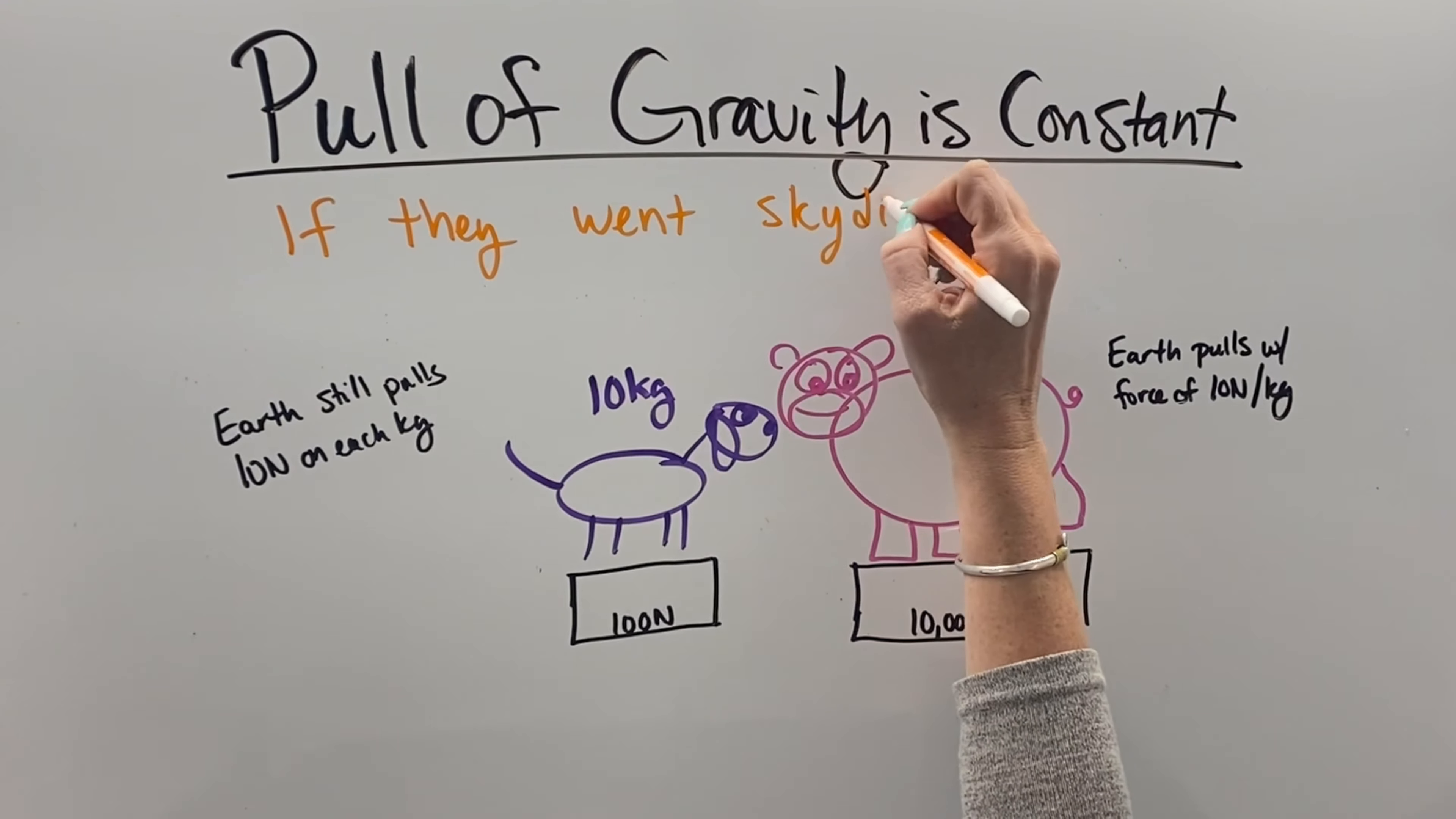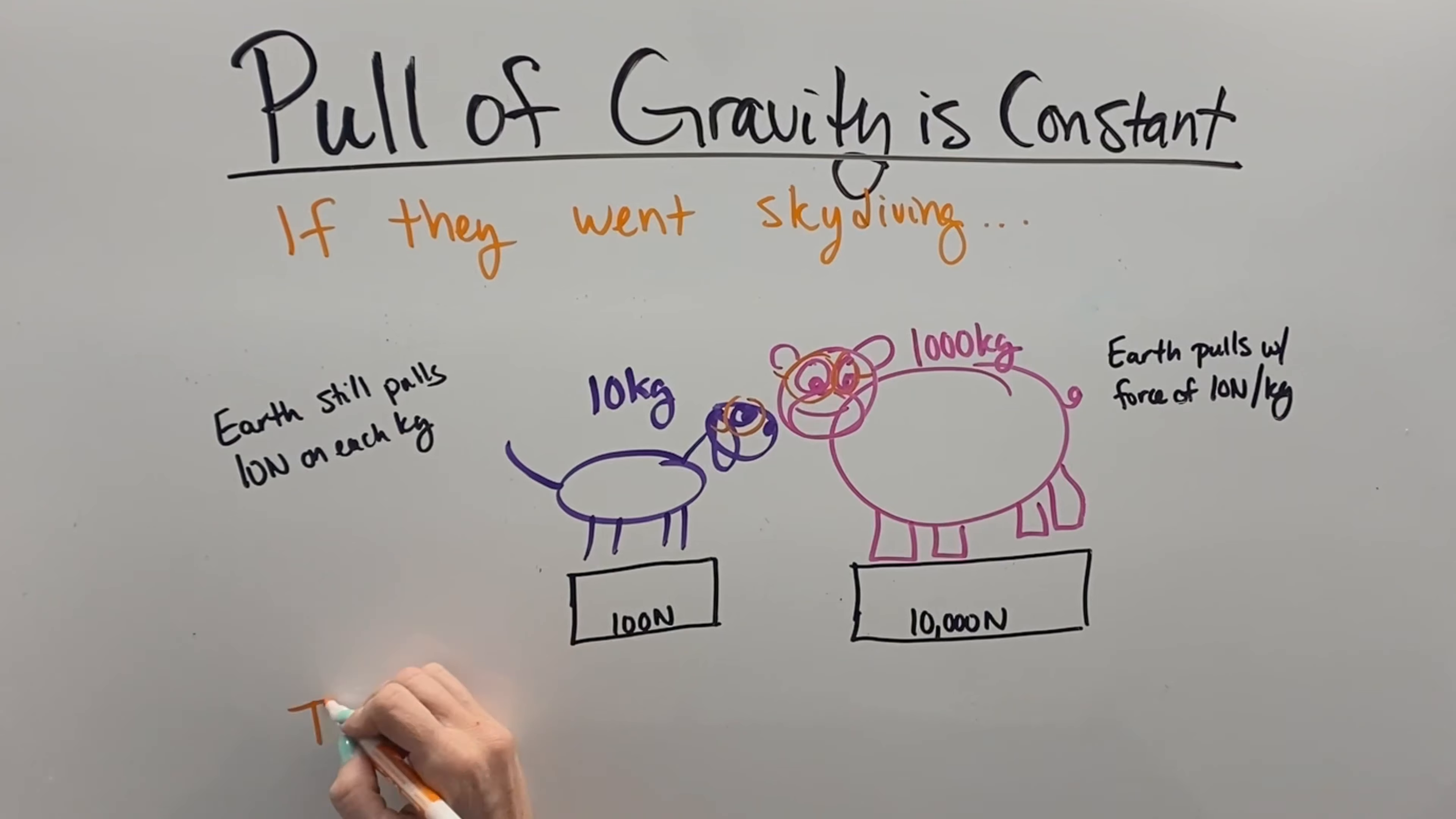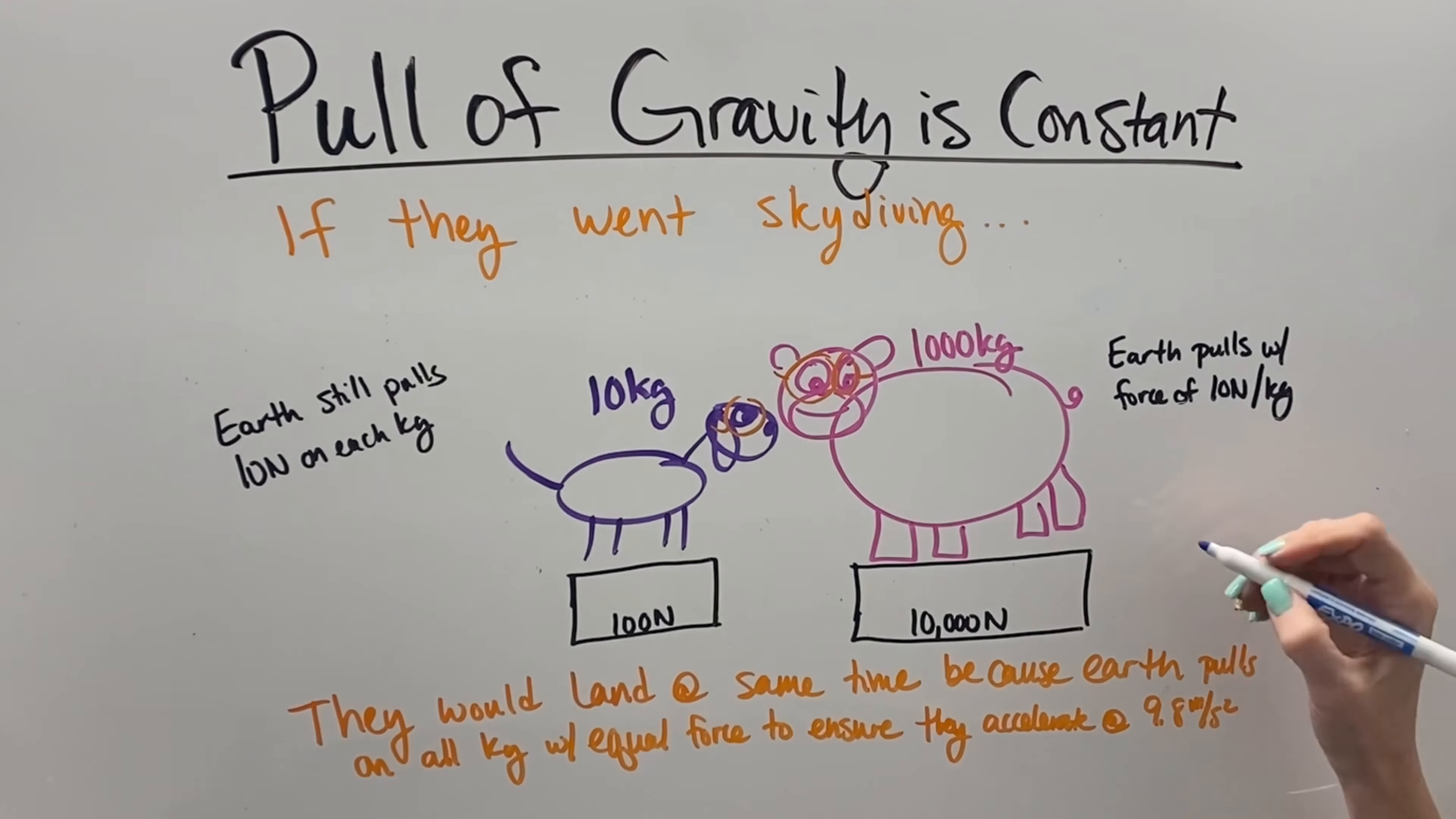If we were to send our dog and hippo skydiving with some super cool goggles, they would fall towards Earth and accelerate at exactly the same pace because the Earth is going to pull 100 times harder on the hippo than it does on the dog, which would cause them to fall and accelerate at the same rate.